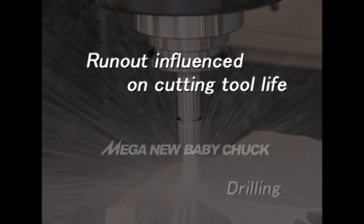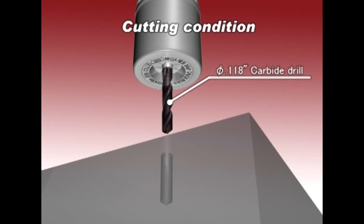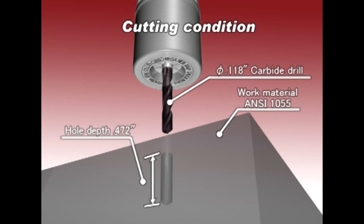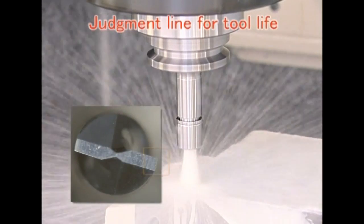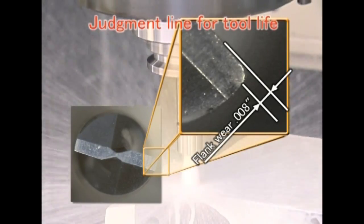Let us show you how run-out accuracy influences tool life in a drilling operation. Using a 118,000 carbide drill cutting 472,000 feet into ANSI 1055 steel, tool life is considered over when the wear width of the relief angle measures 8,000.